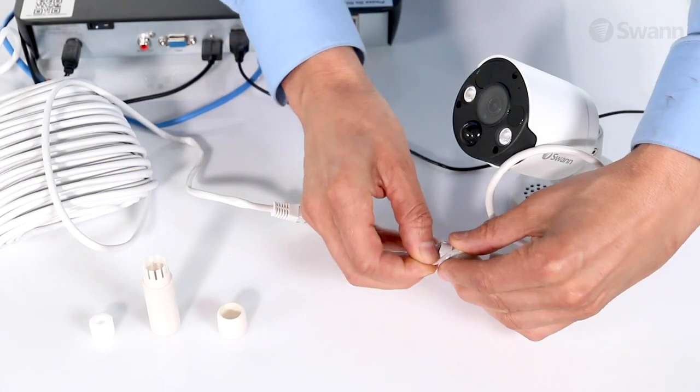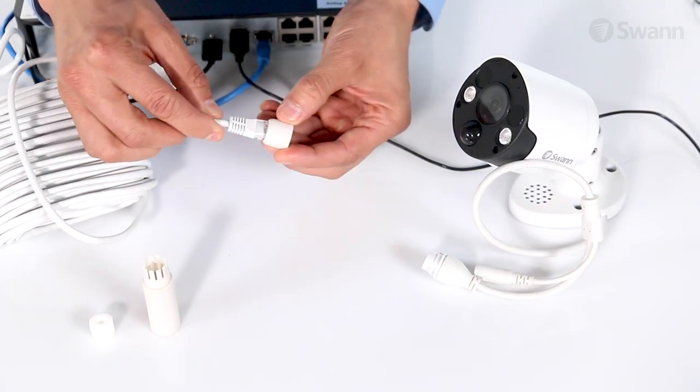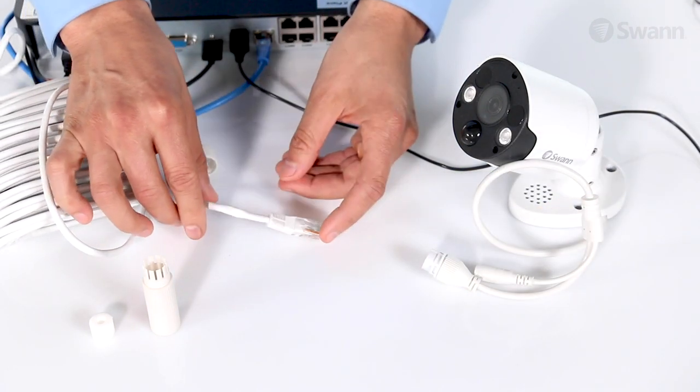If you wish to install the weather guard, begin by installing the O-ring onto the camera's connector. Then, slide the small barrel connector onto the Ethernet cable.